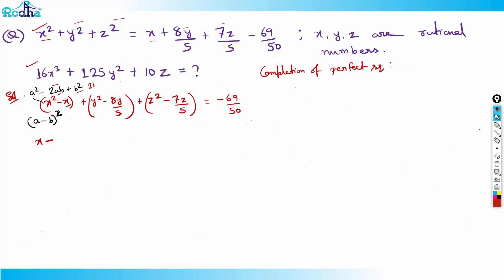So I write (x − 1/2)². Expanding this gives x² − x + 1/4. Since I've added 1/4 on the left side, I also add 1/4 to the right side. So the right side becomes −69/50 + 1/4.